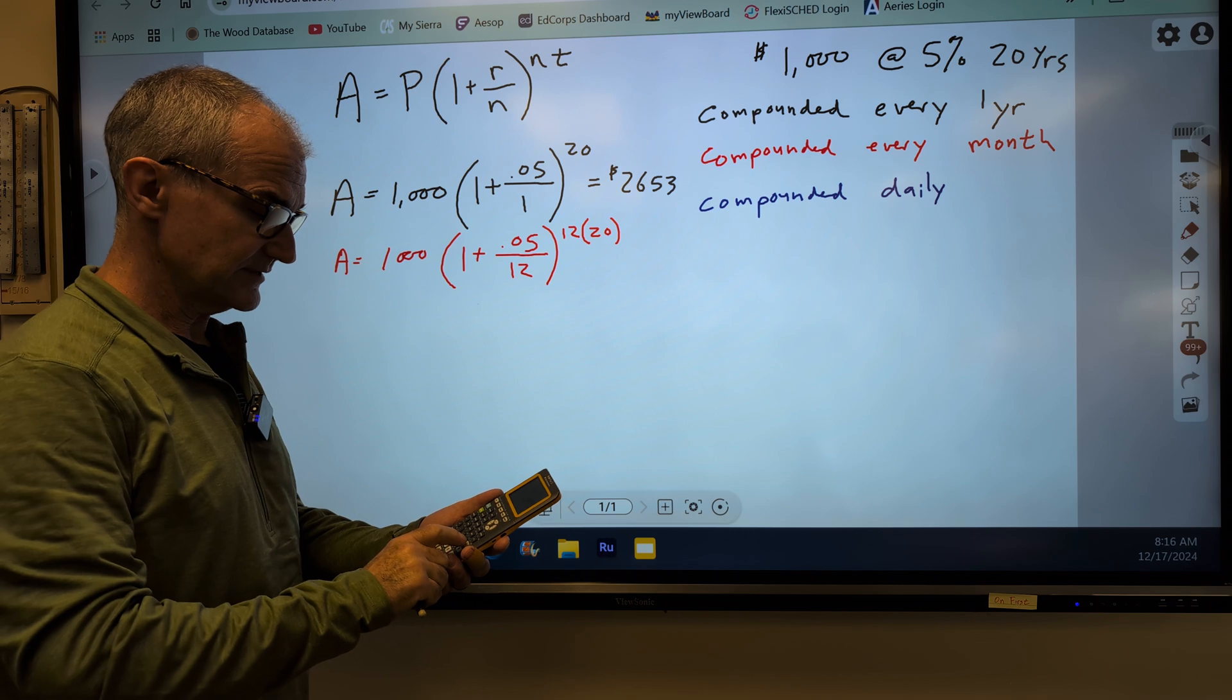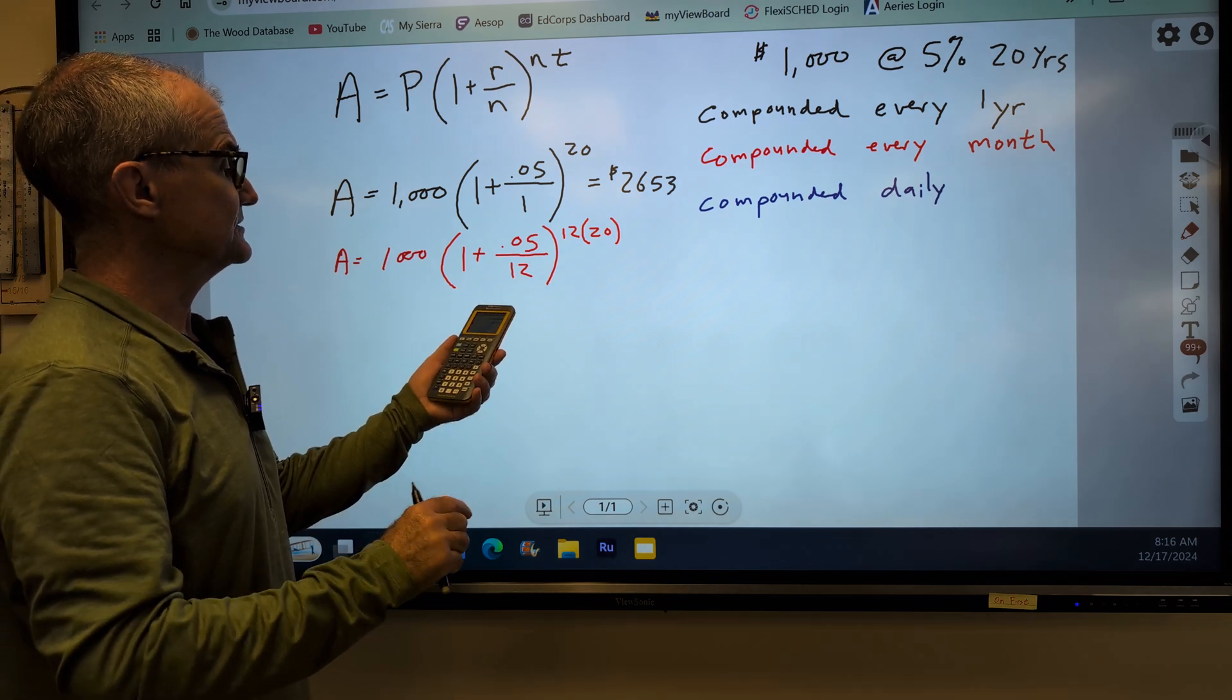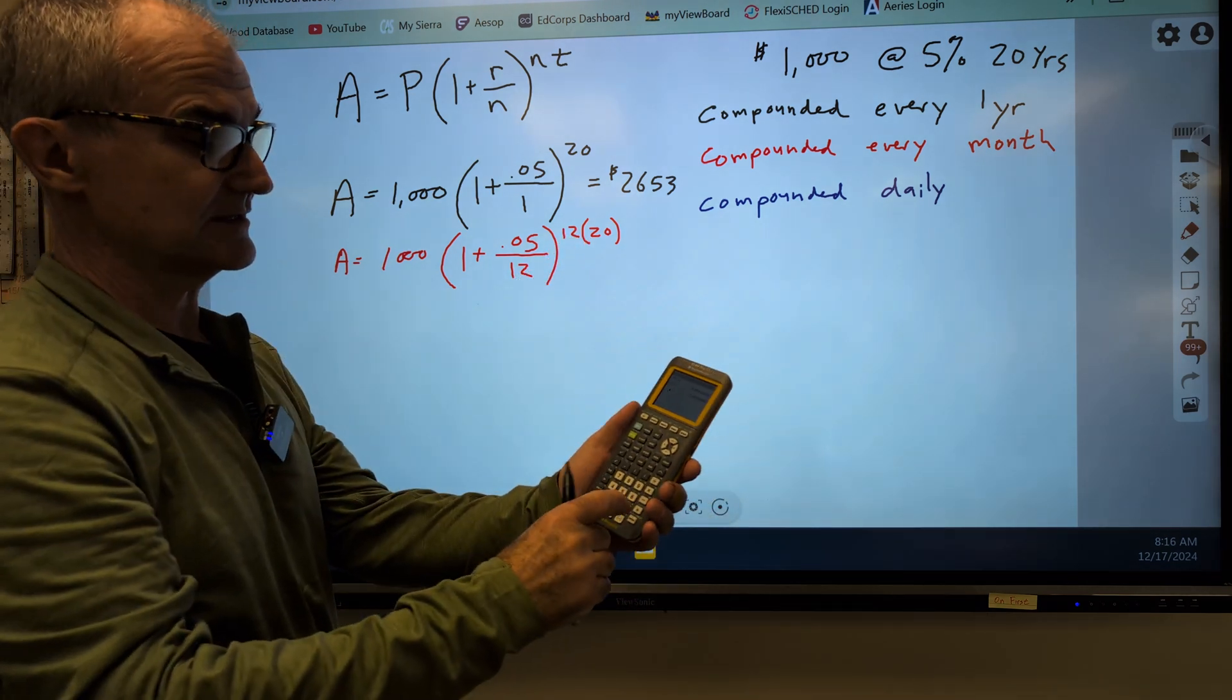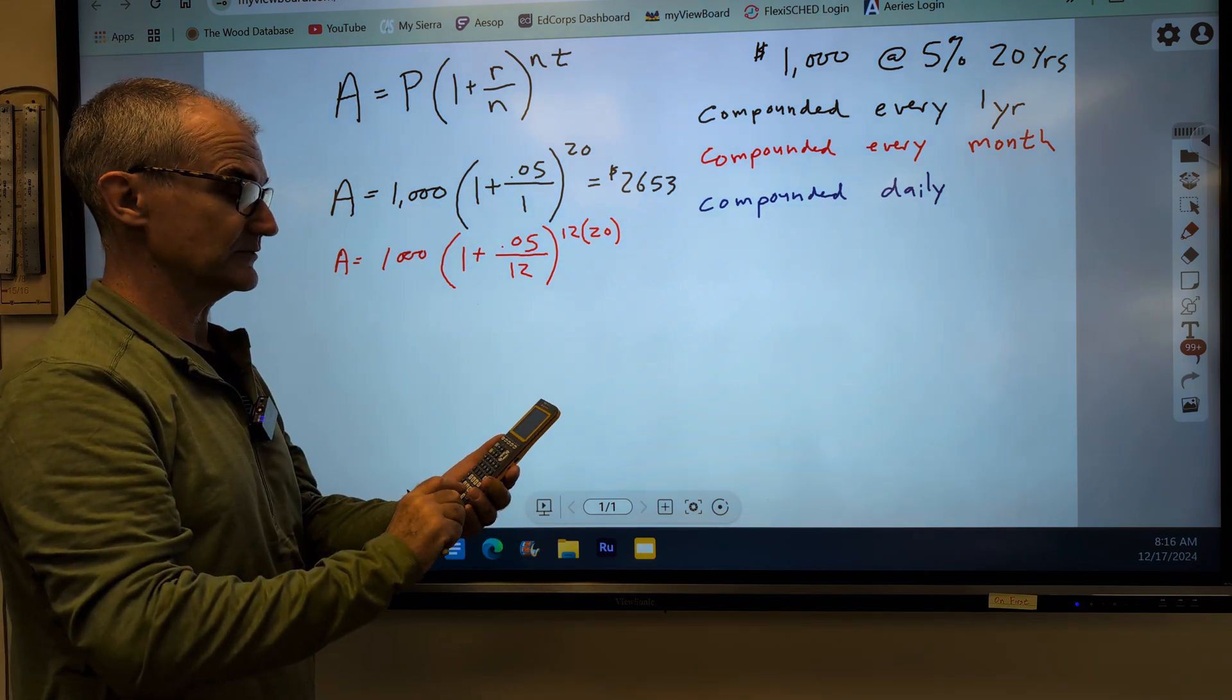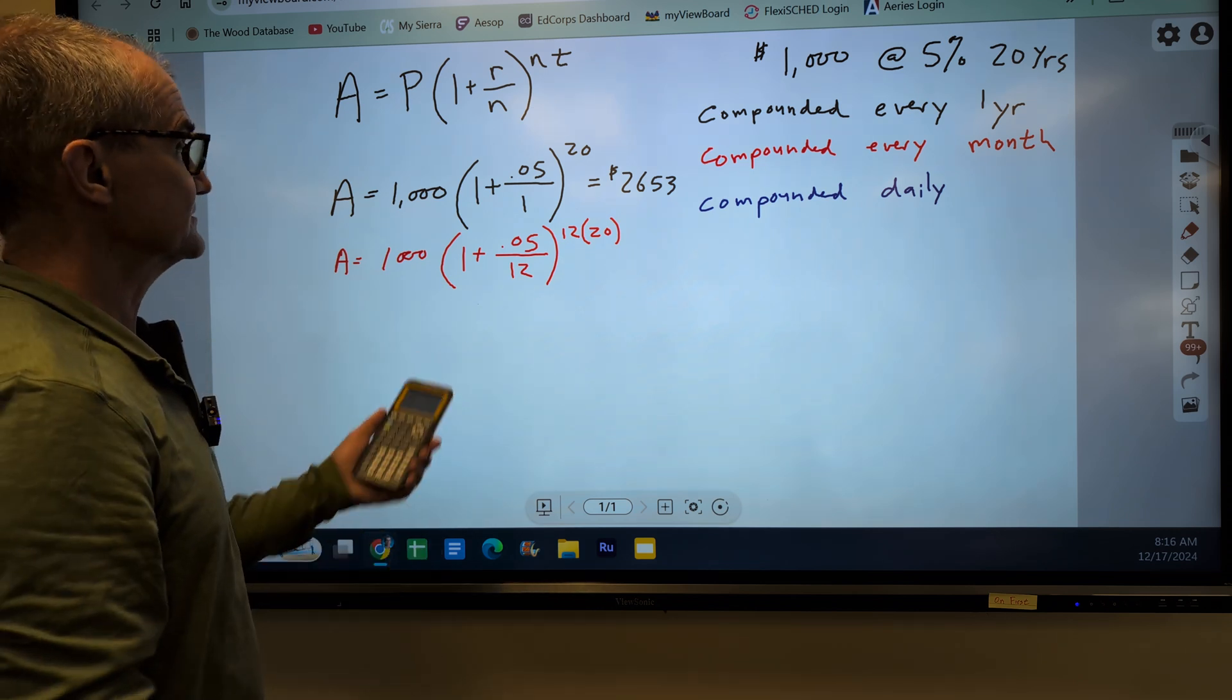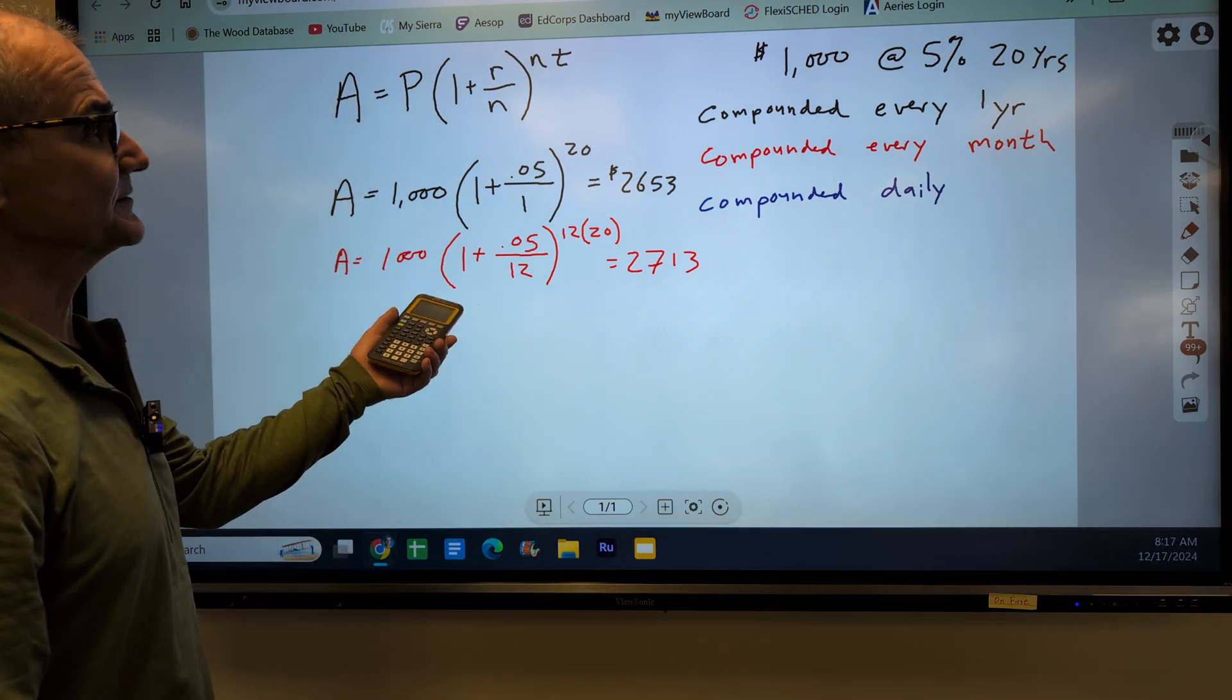So again, in my calculator, I'm going .05 divided by 12 plus 1, that's this value, 1.004, to the power of, I use this key right here, to the power of. But I've got to multiply these things before I take it to the power. So open quantity, 12 times 20, close quantity. And that gives me 2.7 times that $1,000 of the original amount. And that gives me 2713. So it's a little more if you're compounding monthly.